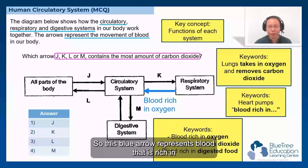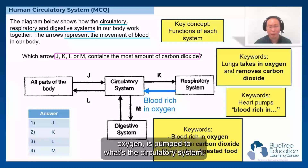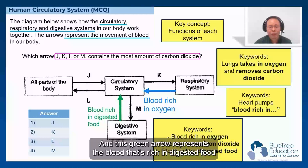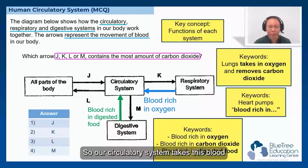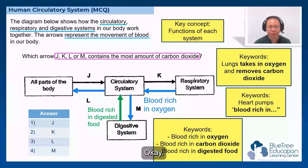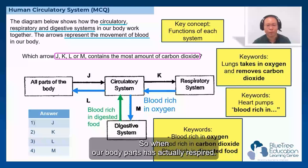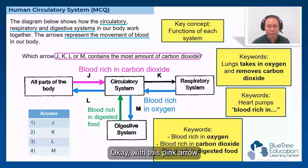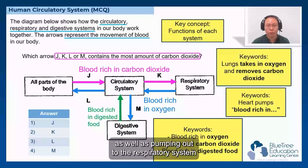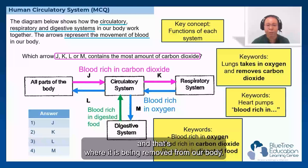This blue arrow represents blood that is rich in oxygen — it's pumped towards the circulatory system. And this green arrow represents the blood that is rich in digested food, pumped from the digestive system towards the circulatory system. Our circulatory system takes this blood and pumps it to all parts of the body. When our body parts have respired, we produce carbon dioxide gas. This carbon dioxide gas is pumped back — shown by this pink arrow — back towards the circulatory system, as well as out to the respiratory system, and that's where it is removed from our body.